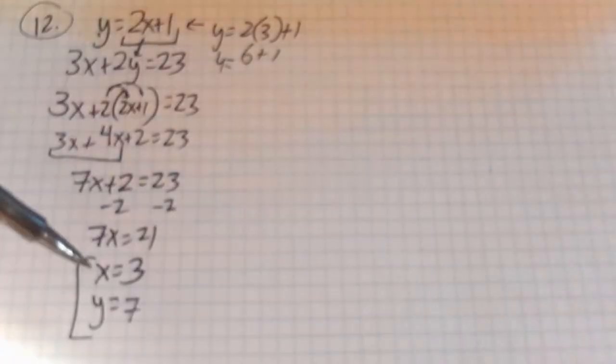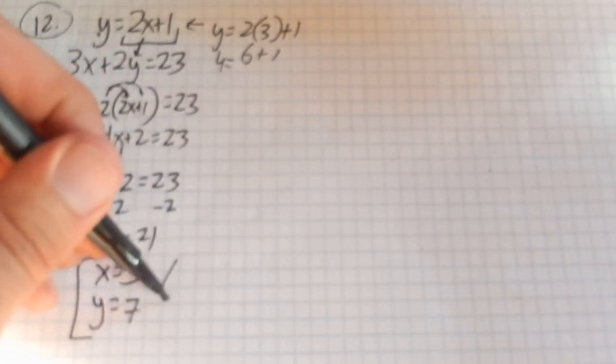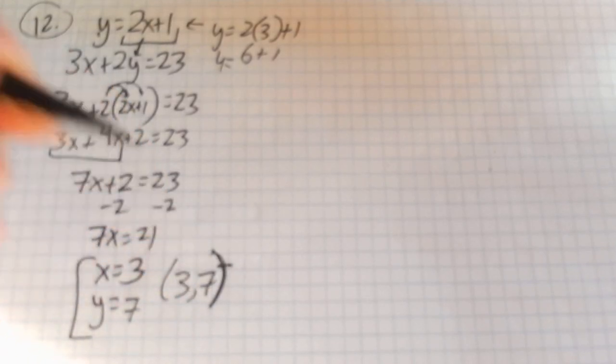So I can write my answer this way, 3, 7, or I can write it as the ordered pair, 3, 7.